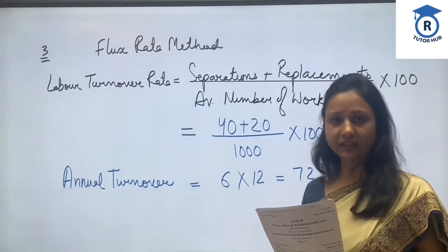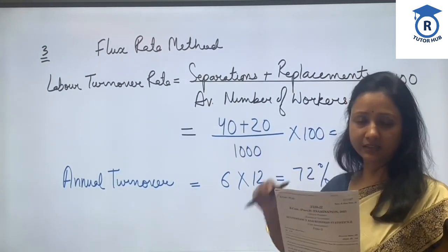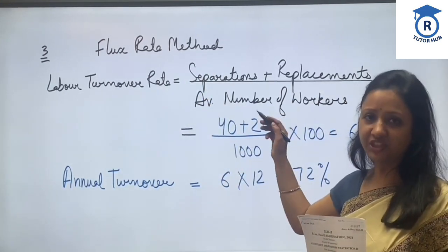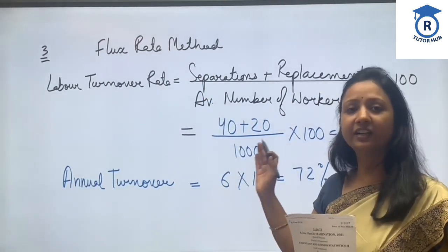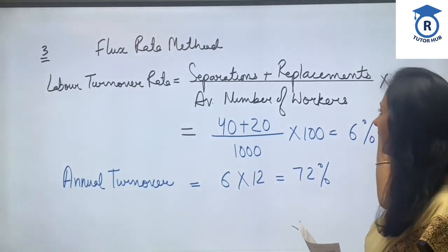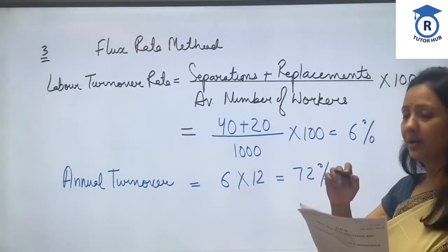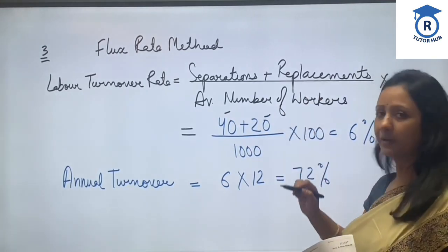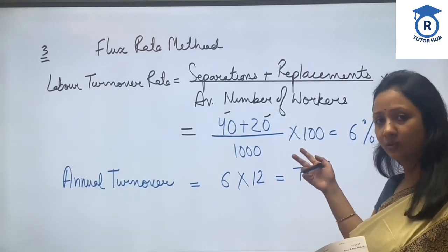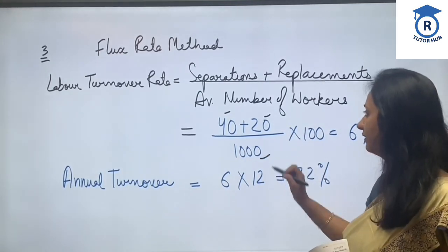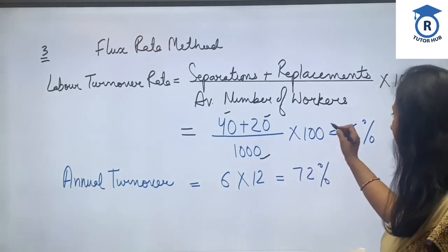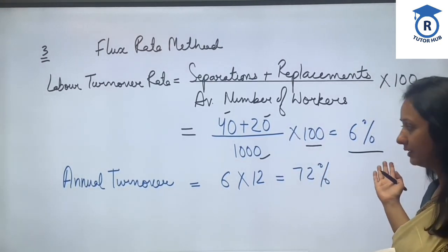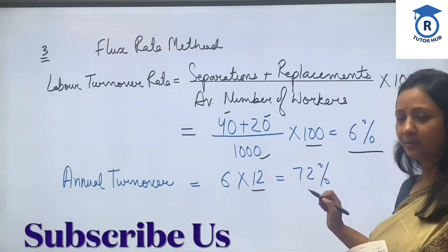The next method is the Flux Rate Method. The formula is: Labor Turnover Rate = (Separations + Replacements) divided by Average Number of Workers, multiplied by 100. Separations were 40 (from the first method) and replacements were 20 (from the second method). So: 40 plus 20 divided by 1000, multiplied by 100 equals 6% monthly rate. Multiplied by 12, the annual rate is 72%.